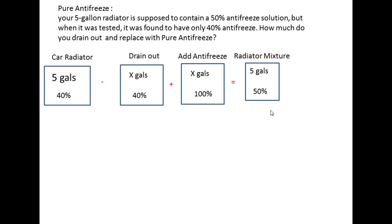Our car radiator contains five gallons. We're going to drain out x gallons — because we don't know how much to drain — from this 40% solution. Then we add x gallons of 100% antifreeze, and that gives us five gallons of 50% solution mixture.